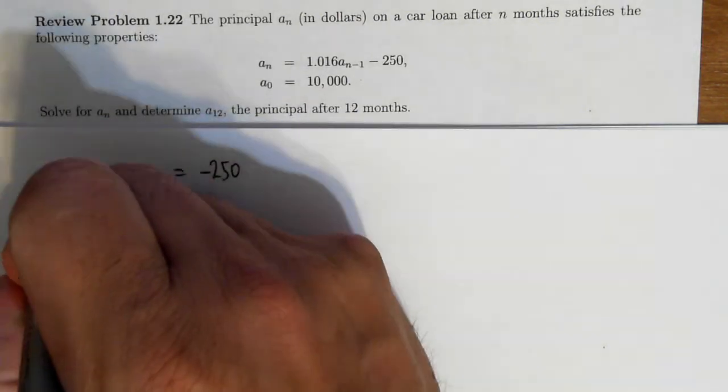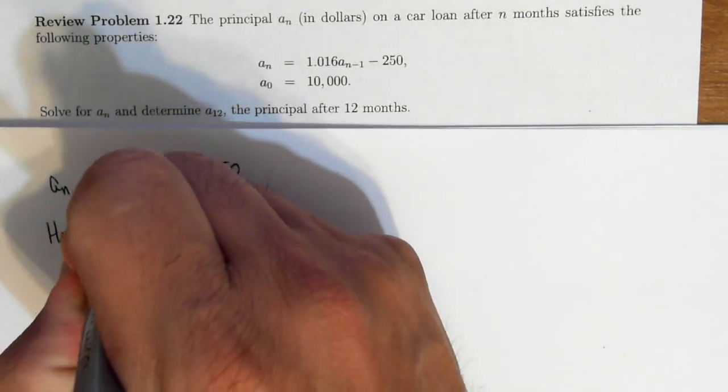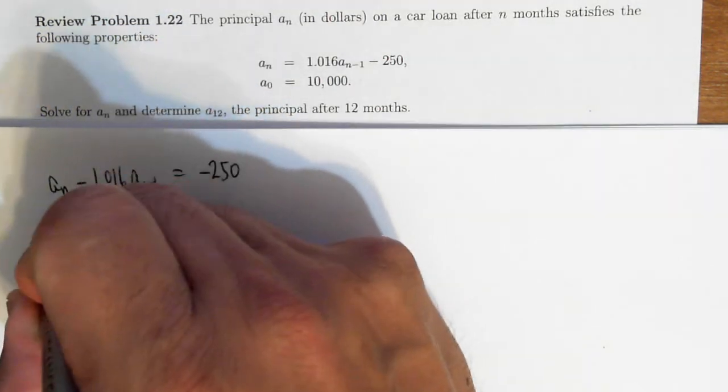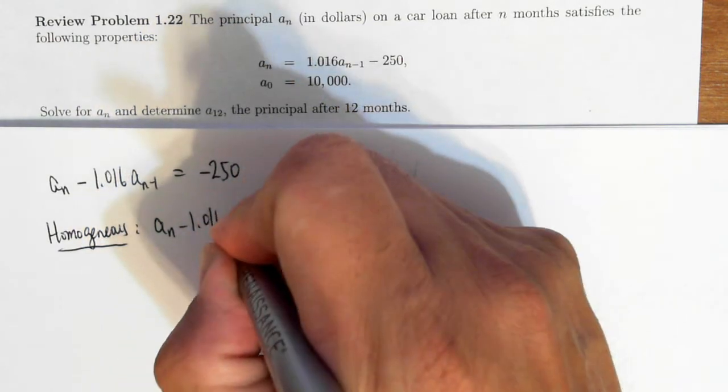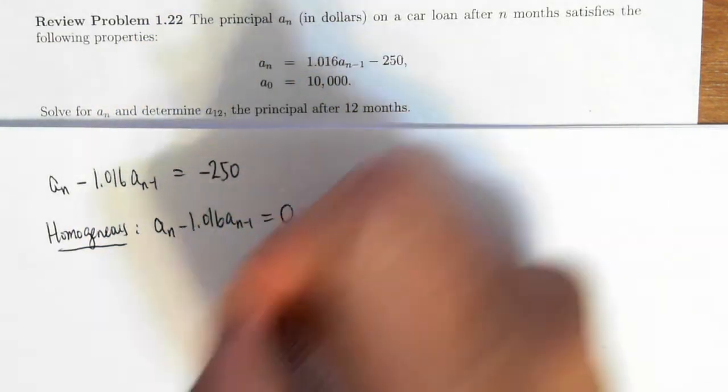So first things first, let's figure out the solution for the homogeneous equation where I just simply replace the right-hand side by zero and solve.